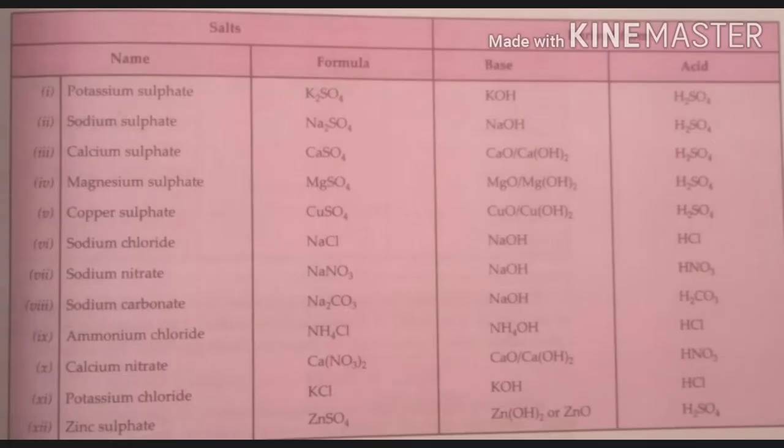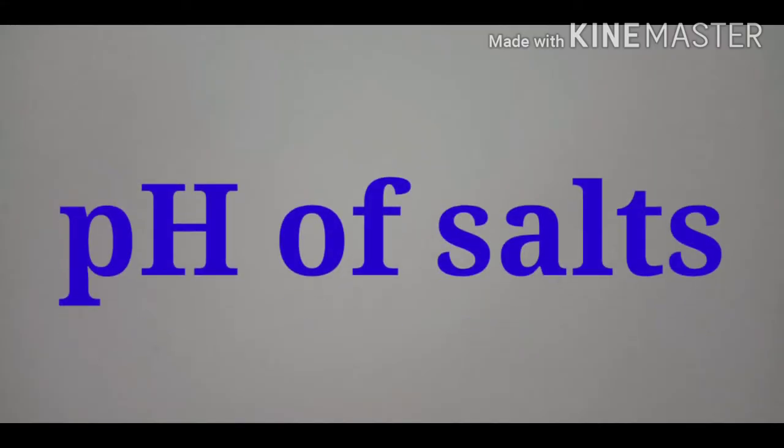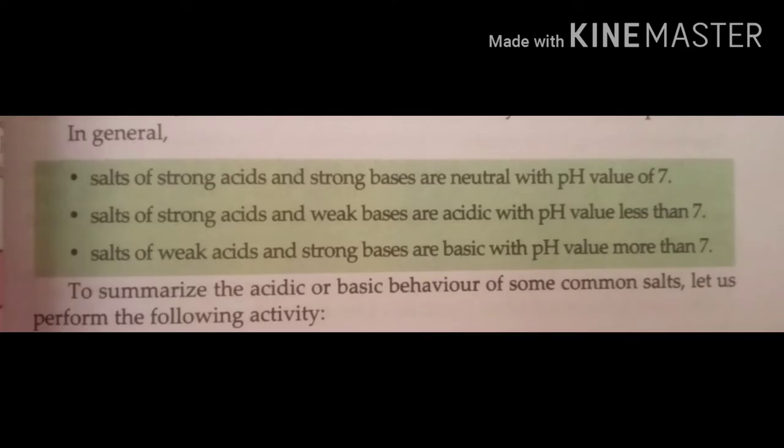Here are some more examples of salts and their acids and bases from which they are derived respectively. You can take a look at the table and ask your doubts if you have any. You have studied about pH of acids and bases according to which we categorize them as weak or strong acids and bases respectively.